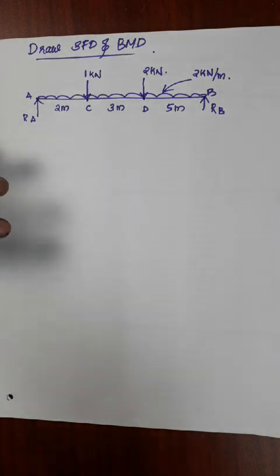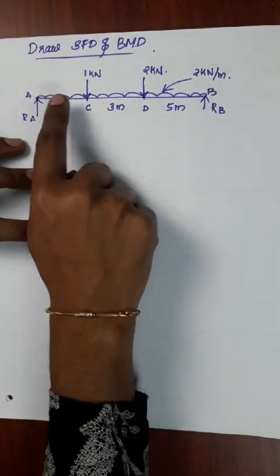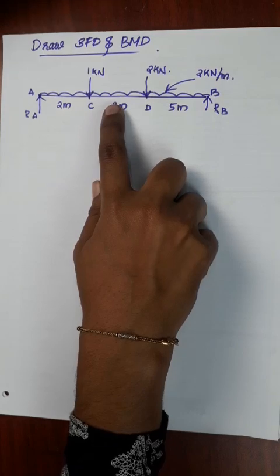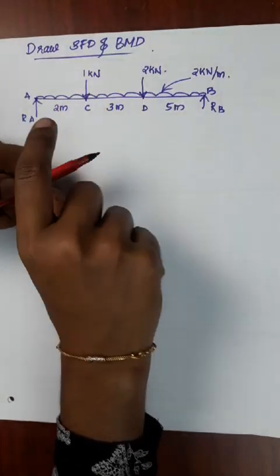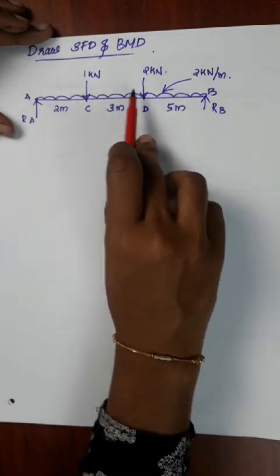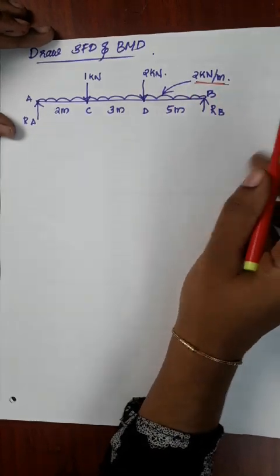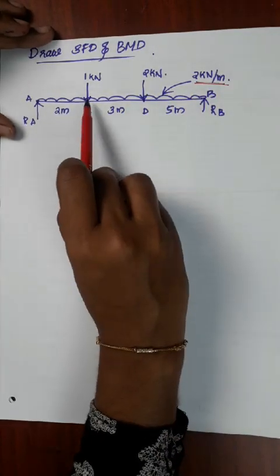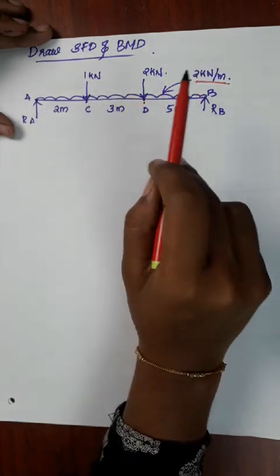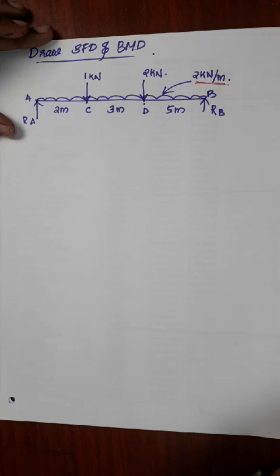Here we will study a beam that has a Uniformly Distributed Load (UDL). The UDL is continuous — at 2m and at the 5m position there are point loads of 2 kN and 1 kN. This is the diagram of shear force and bending moment.